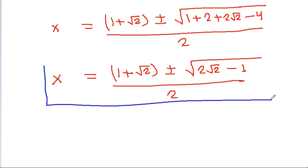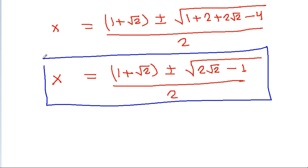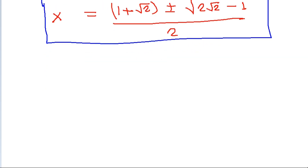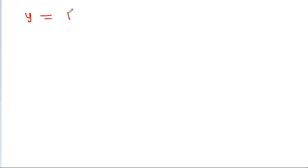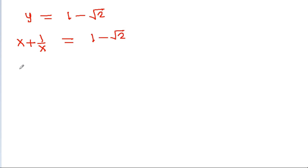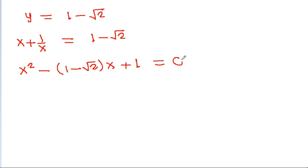So x = 2 — these are two real values for x. When y = 1 - √2, then x + 1/x = 1 - √2, giving x² - (1 - √2)x + 1 = 0.